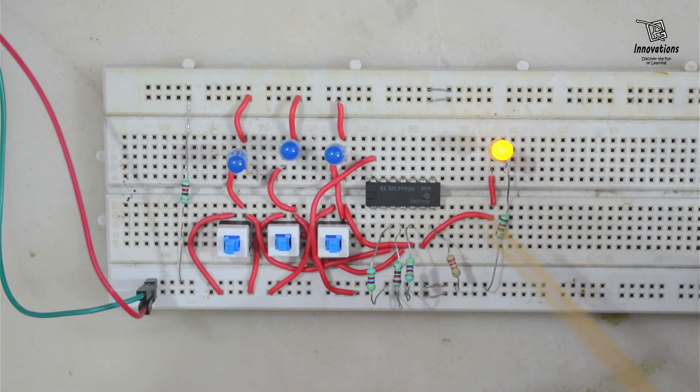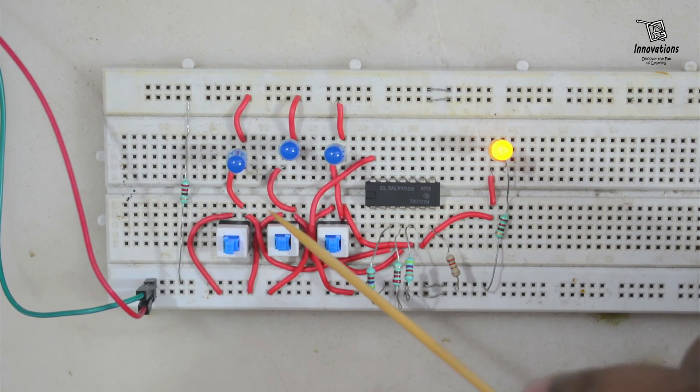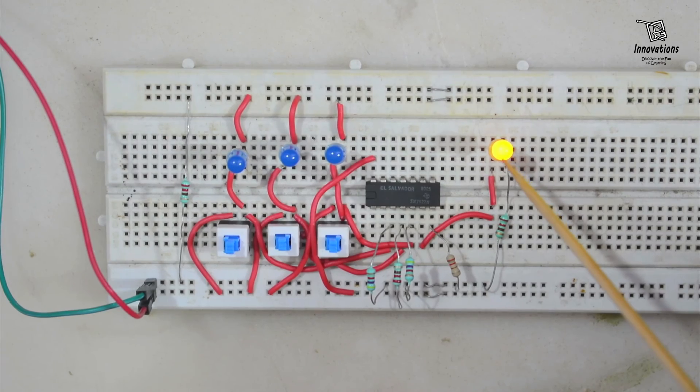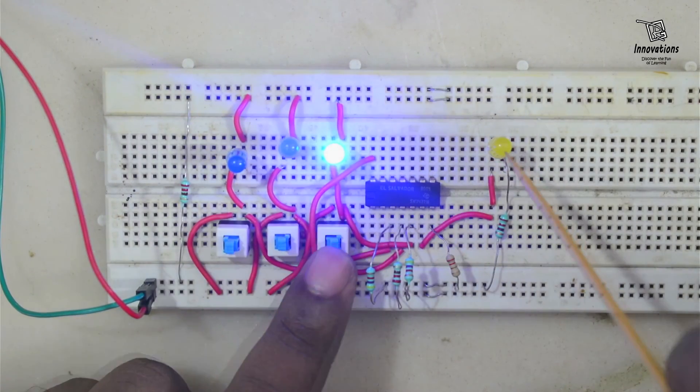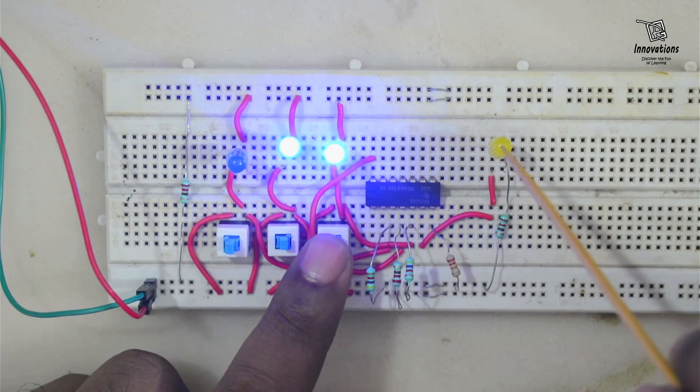As soon as we connected the power you see this output LED is glowing, because all the inputs are currently low. Now if we match it with the truth table, input A 0, input B 0, input C 0, output is high. So 0 0 0 is 1, 0 0 1 is 0, 0 1 0 is 0, 0 1 1 is 0.